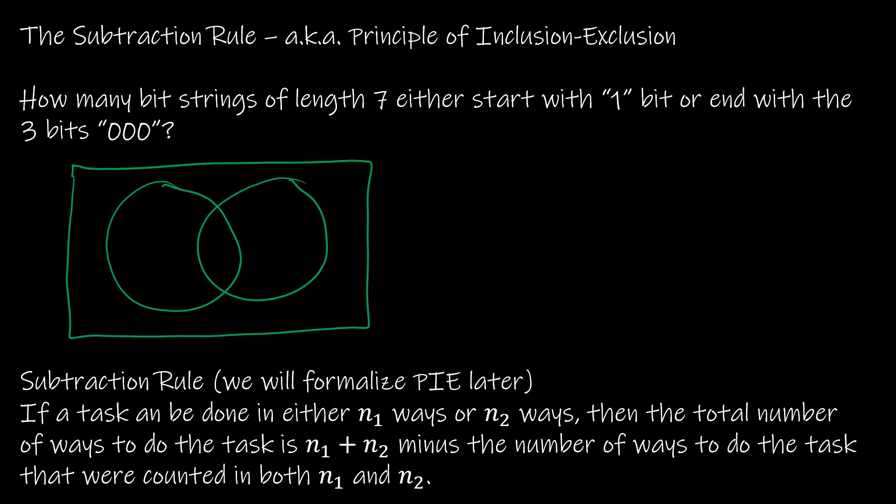And so if I'm reading this question, how many bit strings of length 7 either start with 1 or, so or indicates plus, so you might think, okay, great addition rule, or end with the 3-bit 000. Well, let's take a look at our Venn diagram and exactly what we can show with it.